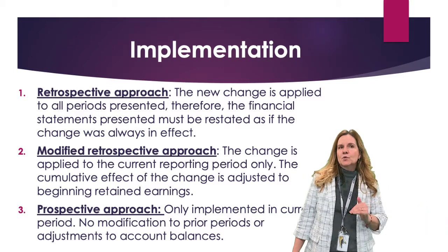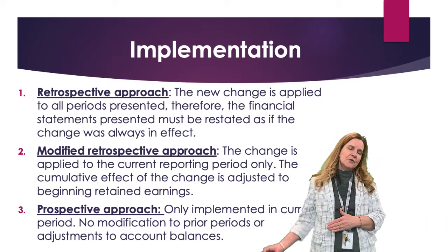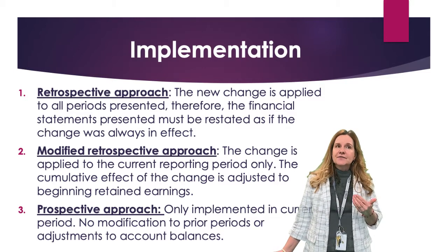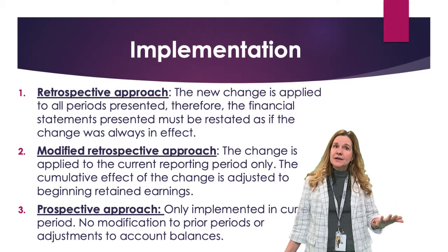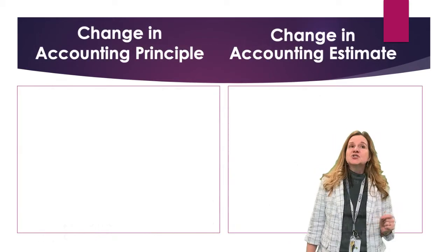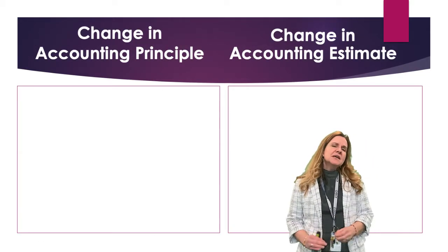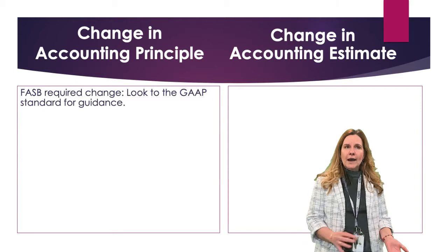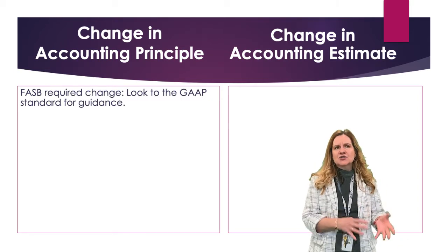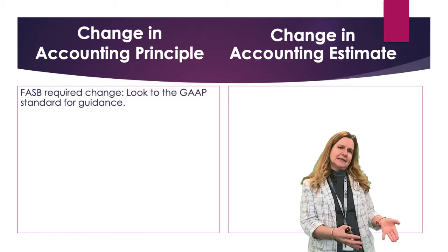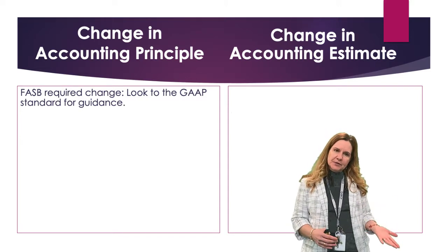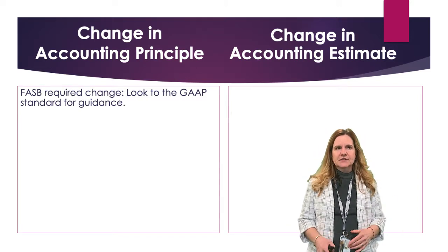Those are the three different ways to implement. As we go through the types of changes, I will identify if it's retrospective, modified retrospective, or prospective. First, change in accounting principle. Sometimes the FASB has a required change, and if that happens, then we have to actually look to the standard for guidance on how to report it — whether it's going to be prospective or retrospective, etc.